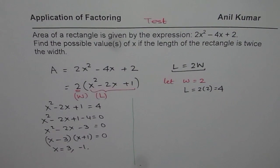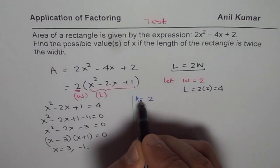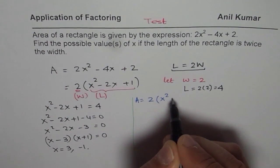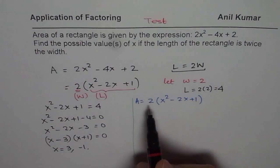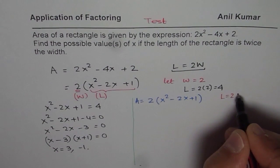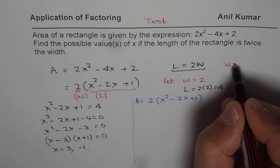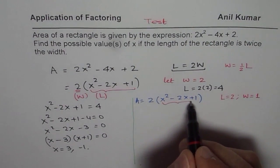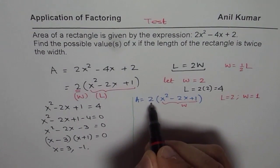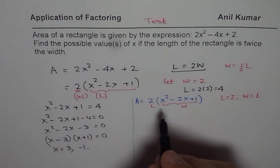So at times, you could think like this. You could think the same expression, which is area equals to 2 times x²-2x+1. You can think that in such a case, length is 2. Let us say length is 2. In that case, width will be half. So width will be half of length. So width will be 1. So if I am treating this as width and this as length, in that case, what do I get? So let me try this out also.